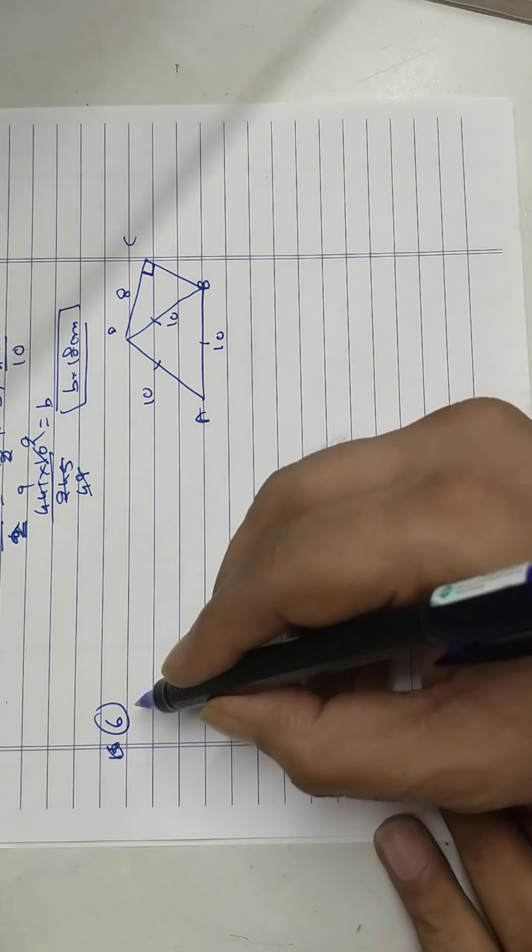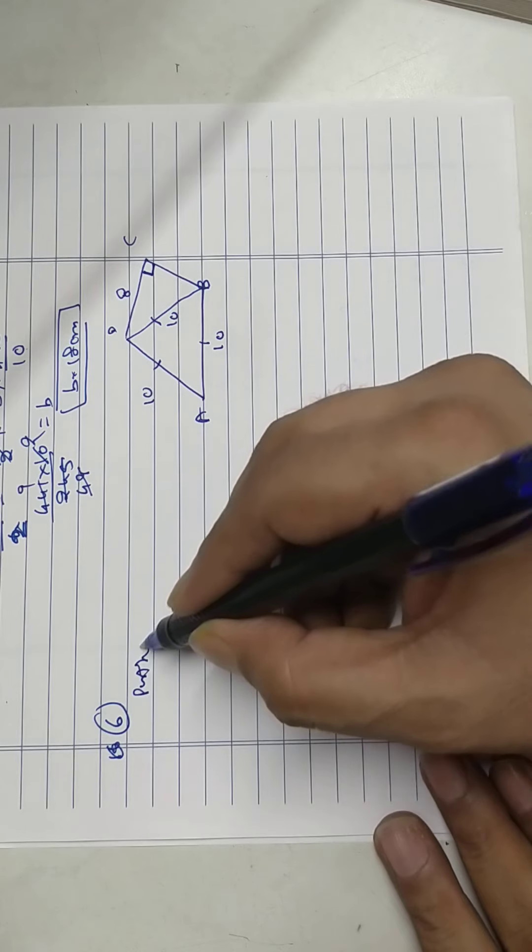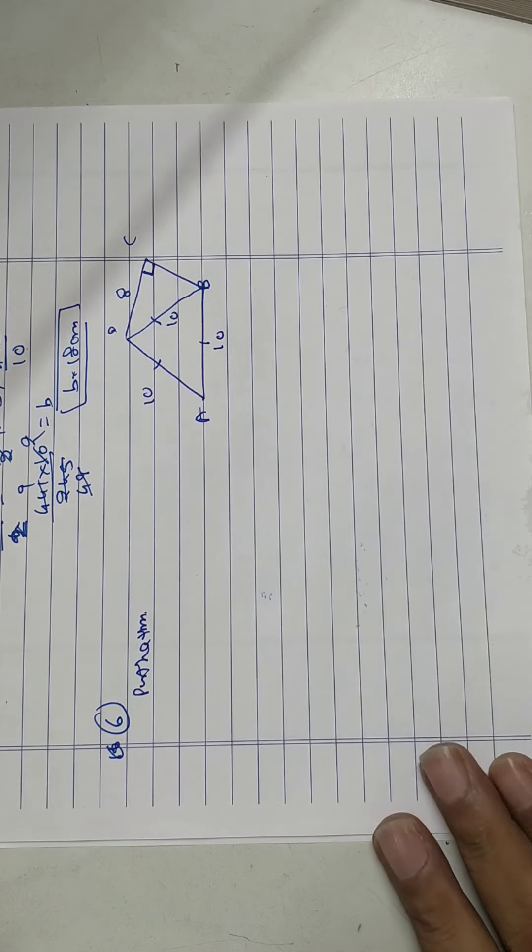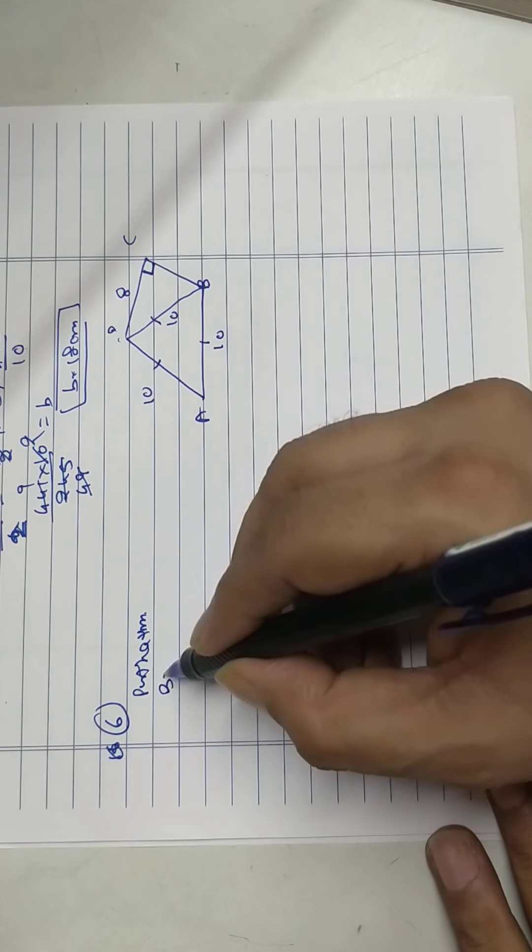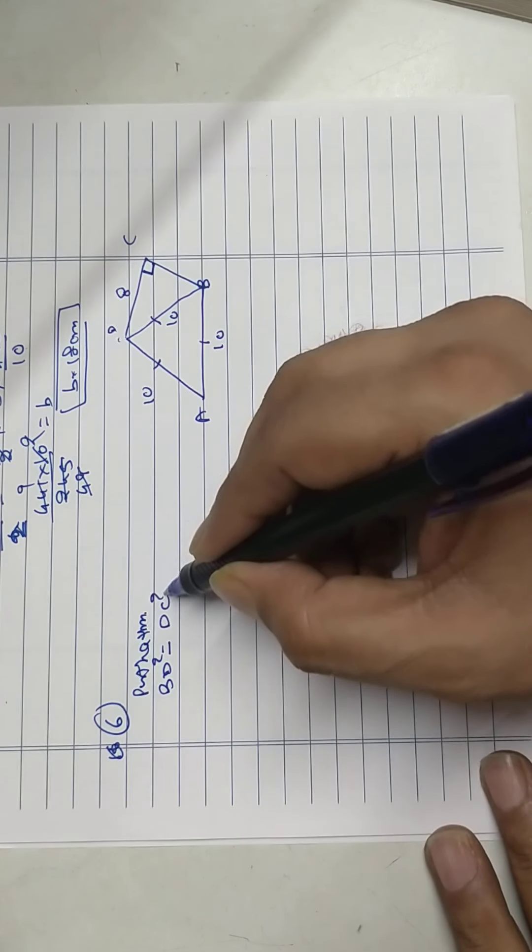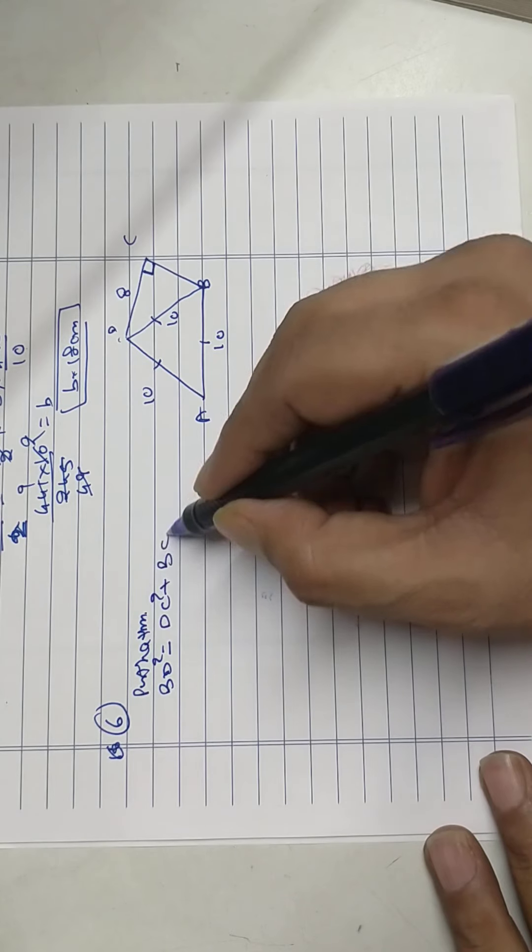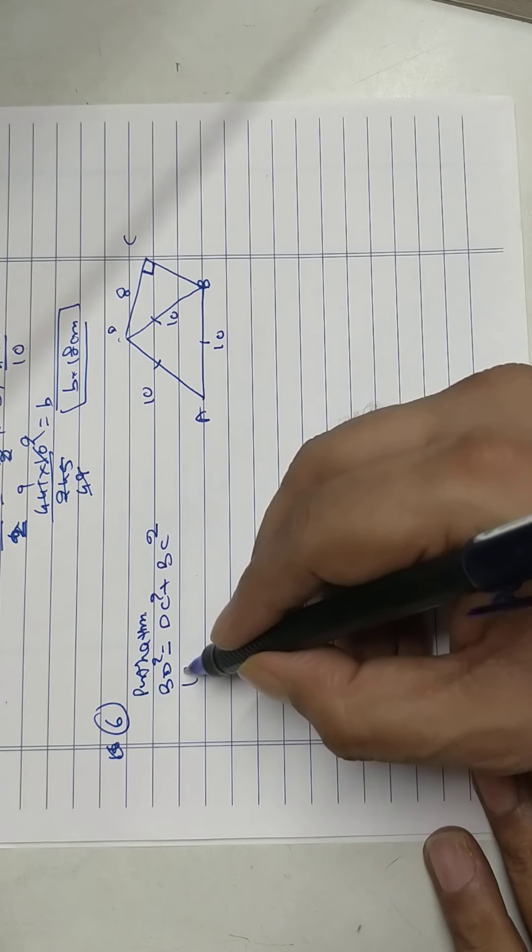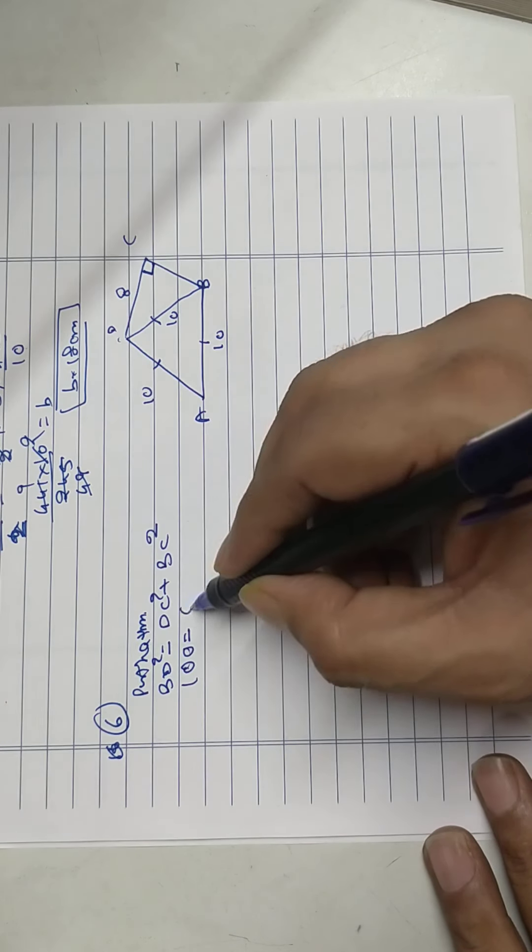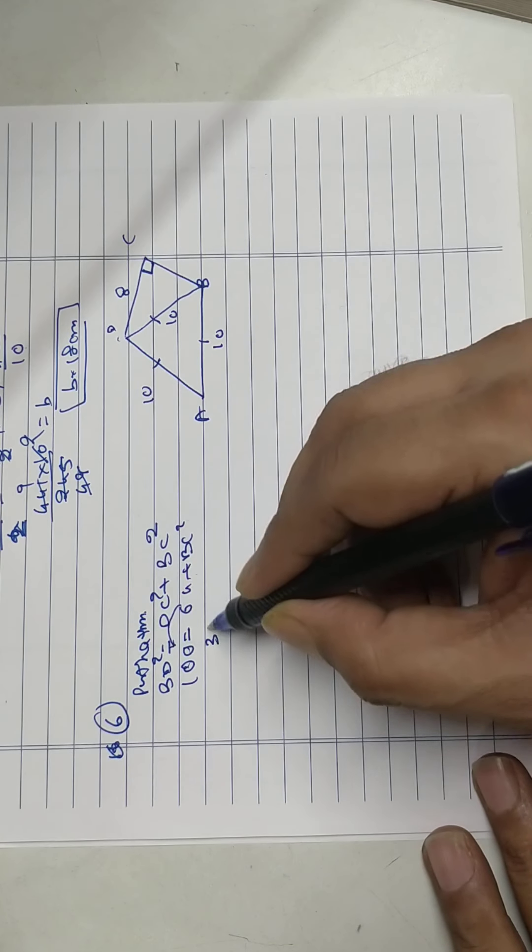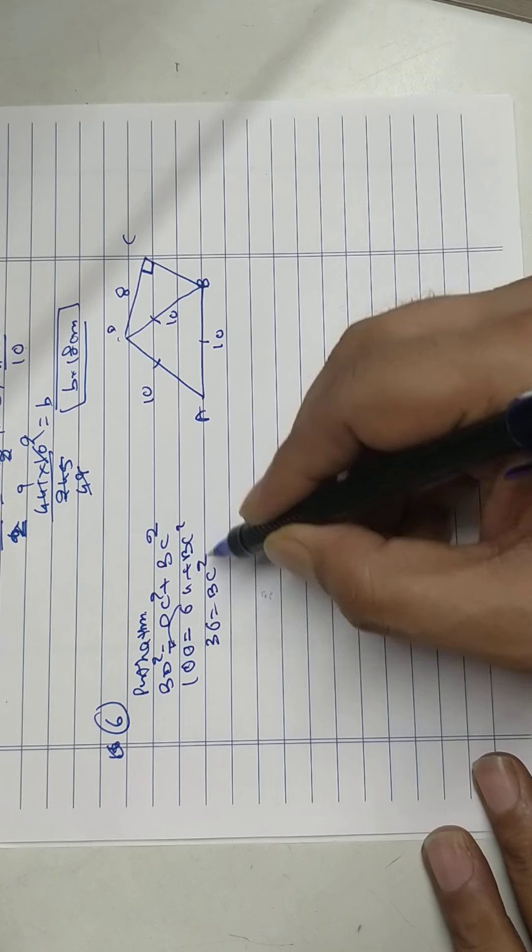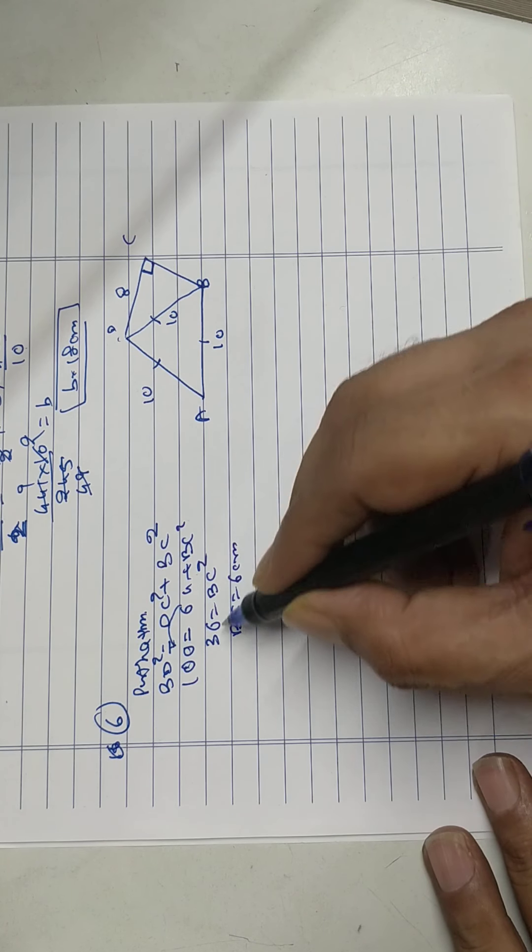First I'll use Pythagoras theorem. BD square equals DC square plus BC square. 100 equals 64 plus BC square. Subtract. 36 equals BC square, so BC equals 6 centimeters.